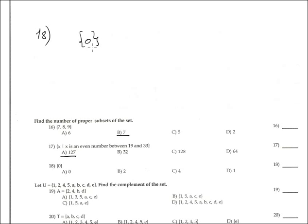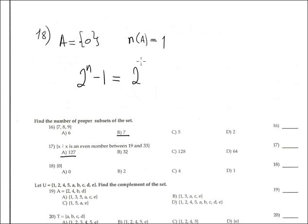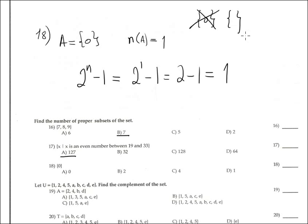Problem 18 is a set formed by only one element. The cardinality of this set A is obviously 1. By definition, the formula for proper subsets is 2 to the n minus 1. So it's 2 to the 1 minus 1, which is 2 minus 1, equals 1. The subsets are the empty set and the set itself, and the proper subset does not include the original set, so the empty set counts as 1. The answer is 1.